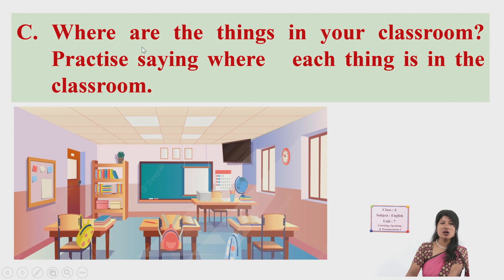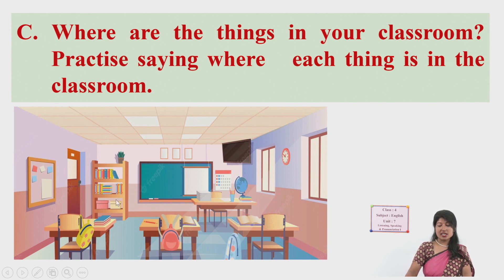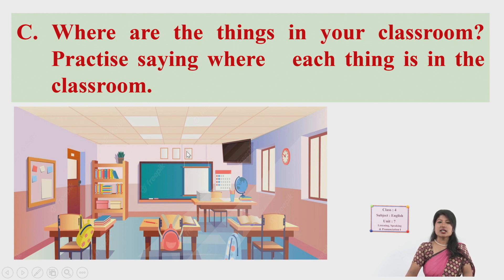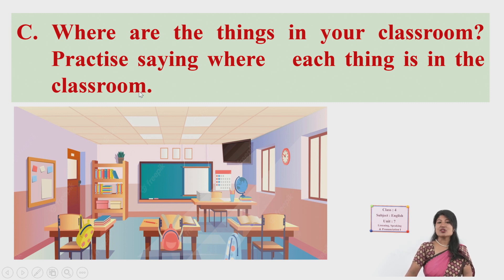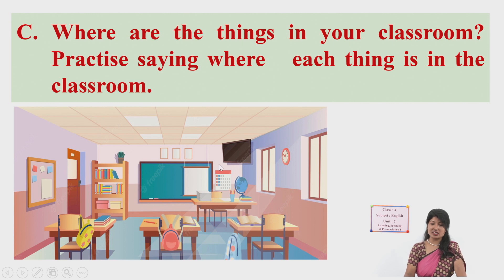Let's see the next activity — where are the things in your classroom? Practice saying where each thing is in the classroom. This is a sample classroom — you should talk about your own classroom. In this picture you can see a clock, chairs, a table, a bag, a rack, a board, a calendar, and a TV set. For example: where is the clock? A clock is on the wall — it's between two windows. Where is the board? The board is in front of the class. Likewise, ask and answer many questions with your friend about the classroom.